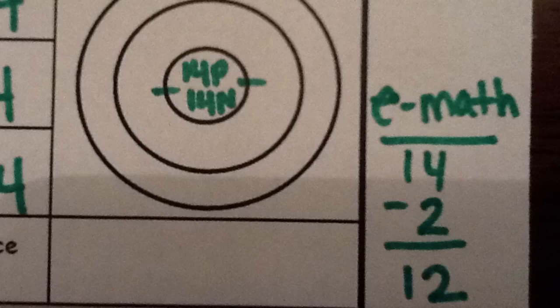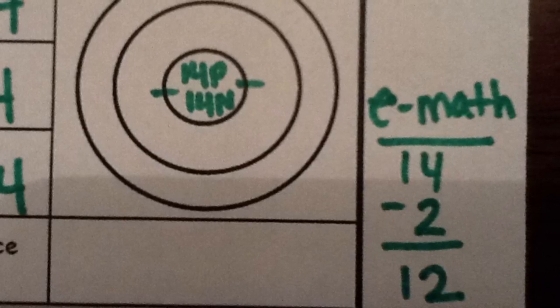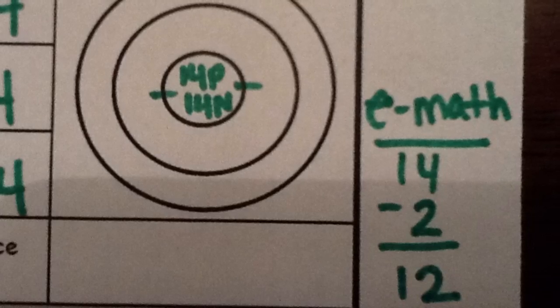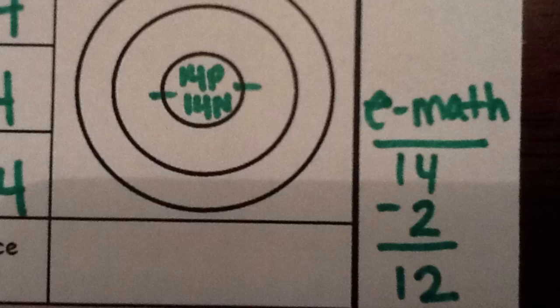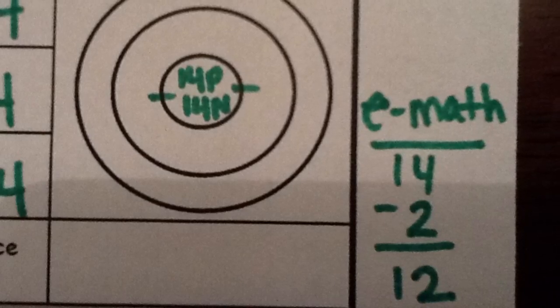So label your 14 protons and 14 neutrons in the nucleus. Then draw the first 2 electrons in the first energy level. You started with 14 electrons. You drew 2 in the first energy level, so you have 12 left.